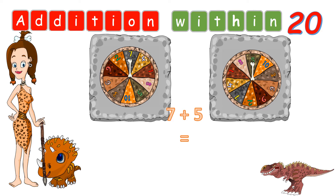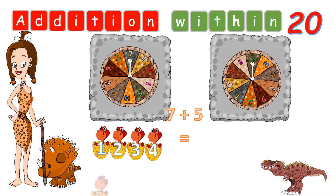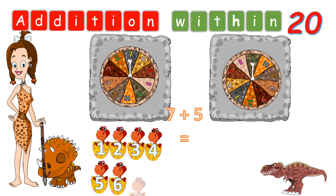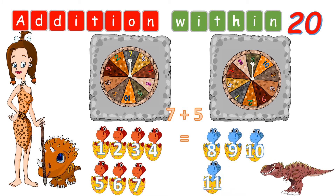Let's do the counting. 1, 2, 3, 4, 5, 6, 7, 8, 9, 10, 11, 12. 7 plus 5 is equal to 12.